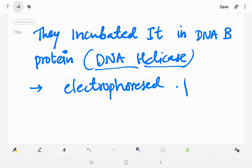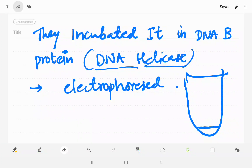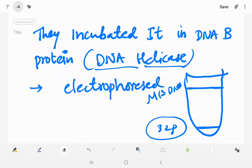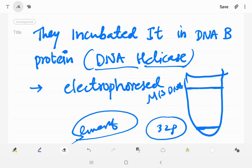After electrophoresis, they found two fragments. One small fragment at the bottom, labeled with 32P. And they found a big fragment at the top that was unlabeled — that was the M13 phage DNA. They found separation between the annealed small linear DNA and the circular M13 phage DNA, which means that DNA helicase has unwinding property.